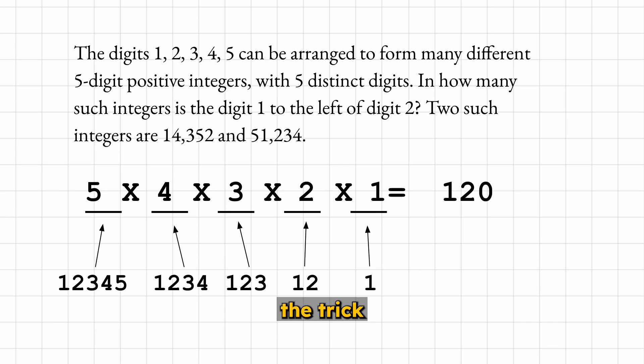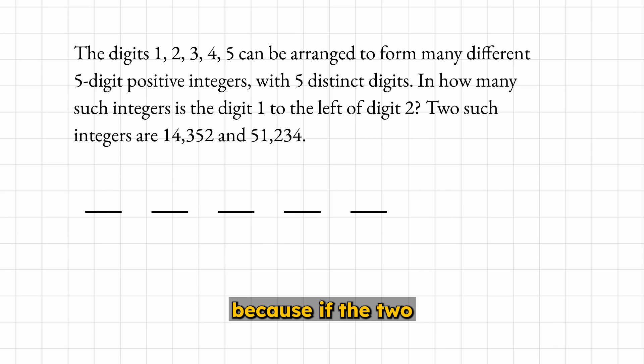Since the problem is asking for 1 to the left of 2, the trick is to know that exactly half meet this condition. You know this because if the 2 is in the middle slot, half of the time 1 is to the left, and half of the time it's on the right.